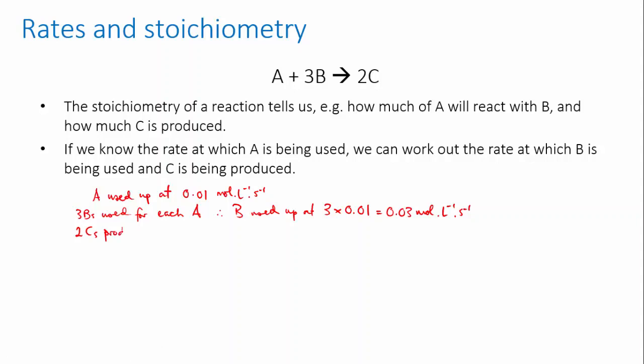And you can see that two Cs are produced for each A that's used up. So the rate at which C is produced is 2 times A, which is 0.02 moles per liter per second.